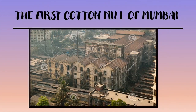The first cotton textile mill was set up in Mumbai in 1854. Mumbai is also the largest center of cotton textile production and is thus known as the cotton capital of India.